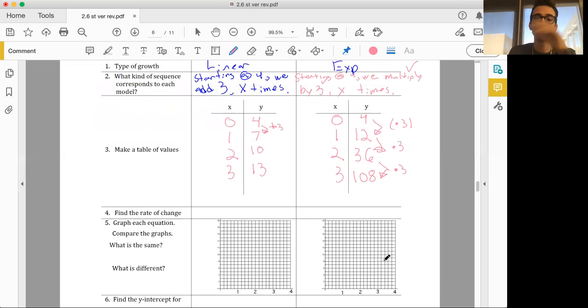Find the rate of change. Rate of change in this case is our slope, and our slope in this case was 3. In this case, our common ratio is 3. So not quite the slope. Don't get those confused. Not quite the slope.